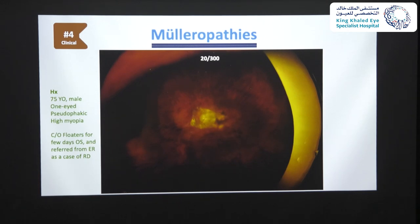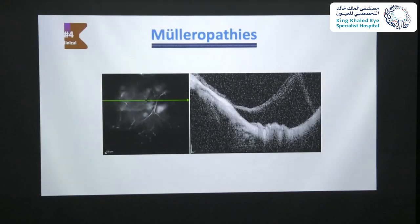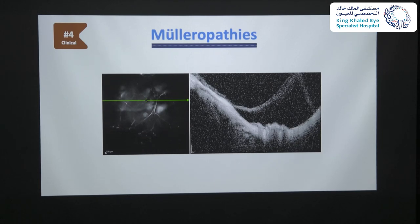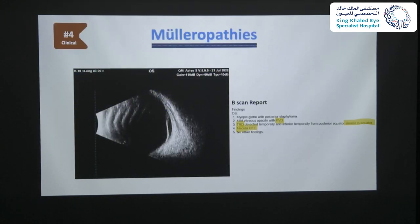The fourth muelleropathy case was a 75-year-old male who was one-eyed, pseudophakic, and highly myopic. He presented to the ER with acute floaters in his seeing eye and was referred to surgical retina as a case of retinal detachment. Fundus examination showed high myopia, large area of posterior retinal atrophy, and wide macular staphyloma, but examination of the temporal retina was limited by corneal scarring. There was no obvious rhegmatogenous retinal detachment. The best quality OCT scan showed what seemed to be a highly elevated retinal detachment with mirror artifact and a deep staphyloma.